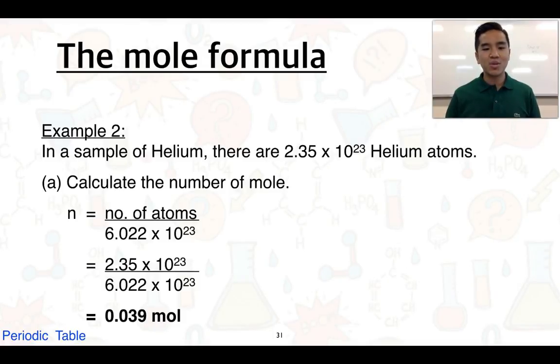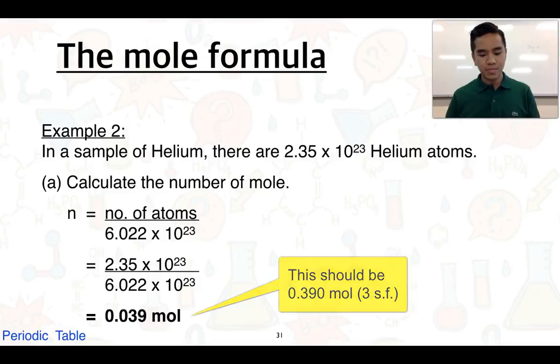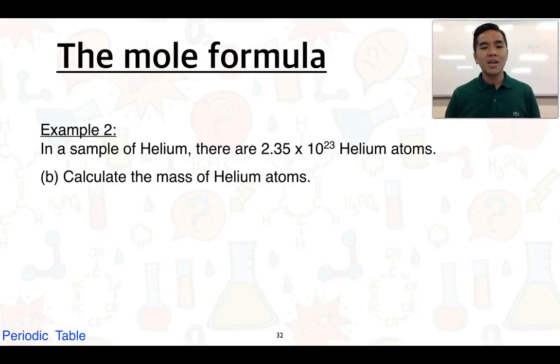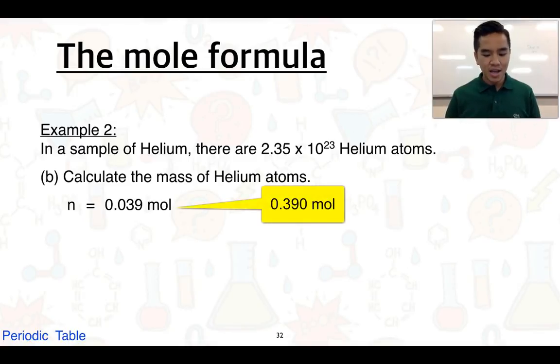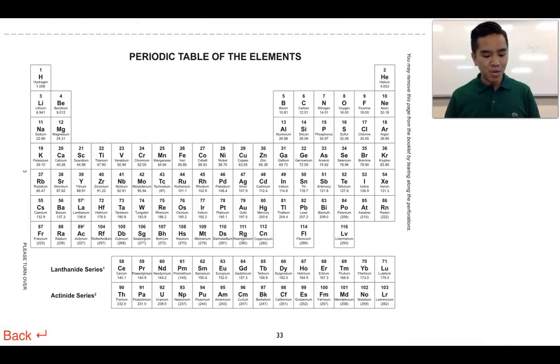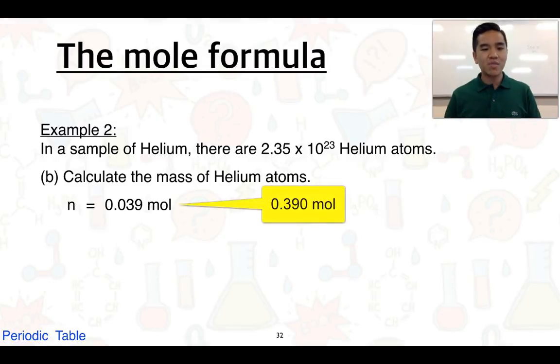The second part: calculate the mass of helium atoms. We worked out the number of moles in part A. We also need to work out the molar mass for helium. From the periodic table, helium has a relative atomic mass of 4.003, so it has a molar mass of 4.003 g·mol⁻¹.